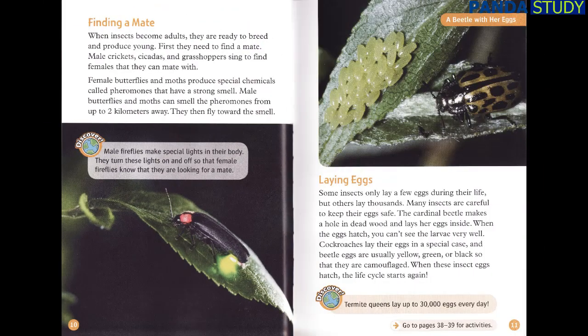Finding a mate. When insects become adults, they are ready to breed and produce young. First, they need to find a mate. Male crickets, cicadas and grasshoppers sing to find females that they can mate with. Female butterflies and moths produce special chemicals called pheromones that have a strong smell. Male butterflies and moths can smell the pheromones from up to two kilometres away and then fly toward the smell.